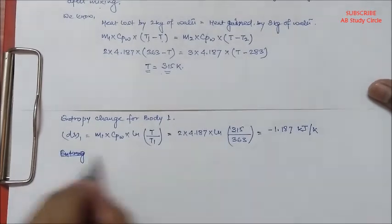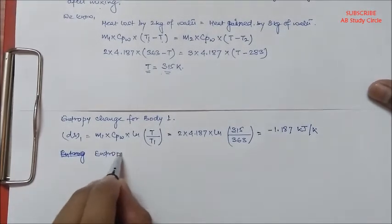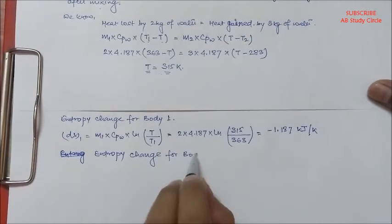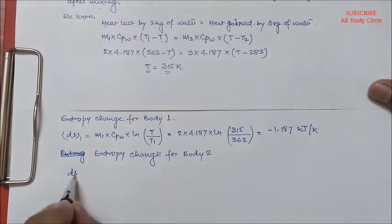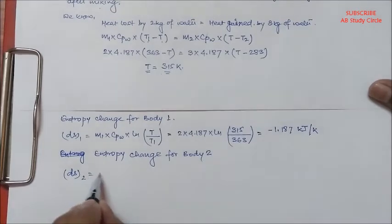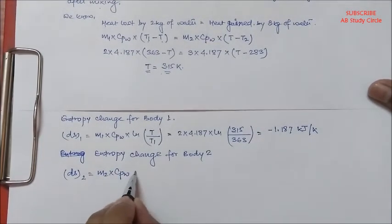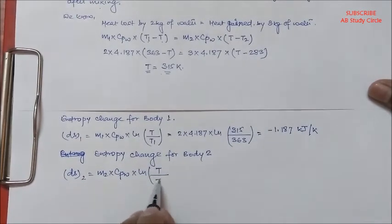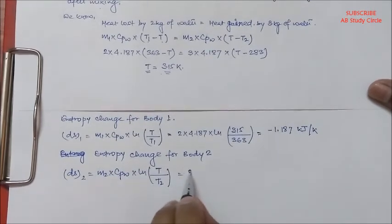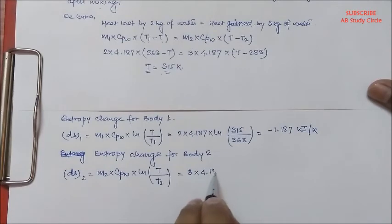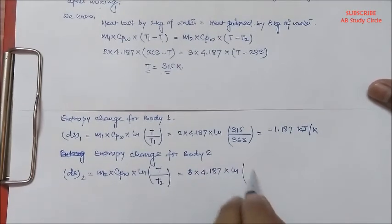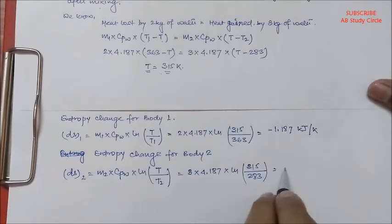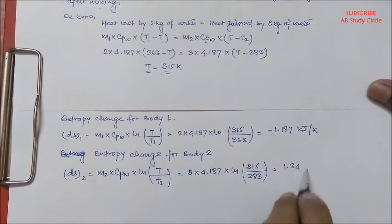ΔS2 = M2 × CPW × ln(T/T2). For body 2, it will be 3 × 4.187 × ln(315/283), and it will be 1.346 kJ per Kelvin.